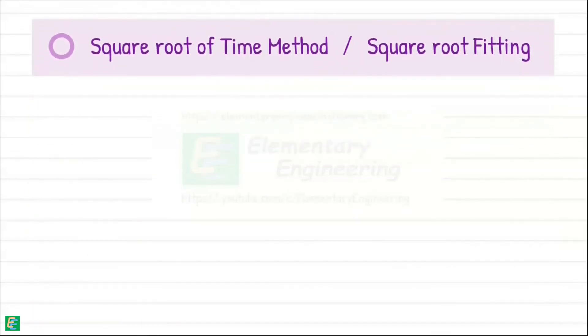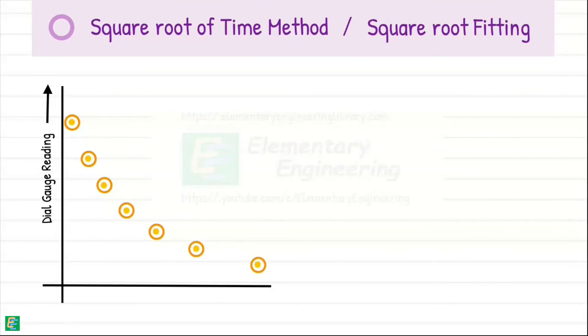The square root of time method is typically used for analyzing consolidation data in high permeability soils like sand. We use square root of time on one of the axes because these soils settle very quickly.